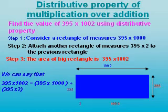That is 395 multiplied with 1000 and 395 multiplied with 2. So this explains the distributive property of multiplication over addition.